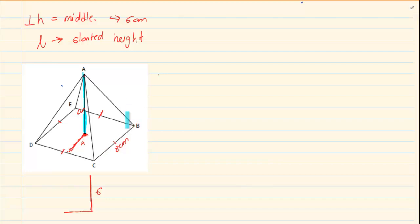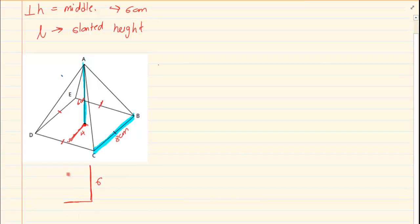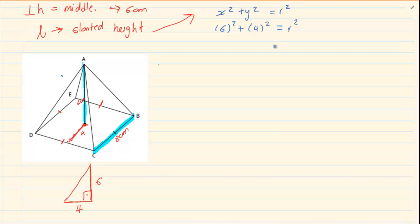If the whole length is eight then the middle is four. So we now have this base is four. So the slanted height refers to this outside part. Now if you look it is actually hypotenuse. So what do we have? We have six squared. The slanted height is going to be x squared plus y squared is equal to r squared. So we have six squared plus four squared which is equal to r squared which gives us 52.